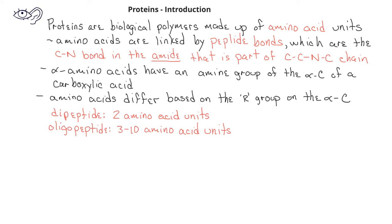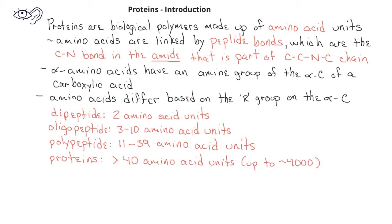If we have more than ten amino acid units linked together, we call that a polypeptide. When we have between 40 and 4,000 amino acid units linked together, we call these very large molecules proteins.